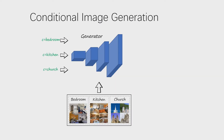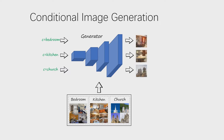Here is a typical conditional image generation scenario with images labeled from three categories: bedrooms, kitchens, and churches. The generator is trained using conditional generative adversarial networks, or conditional GAN. Note that all data is known in advance and learned jointly.